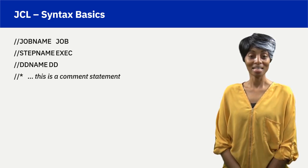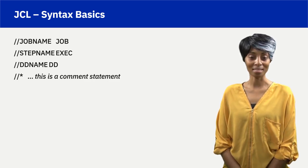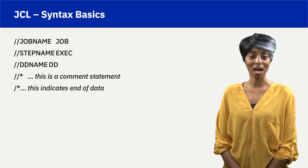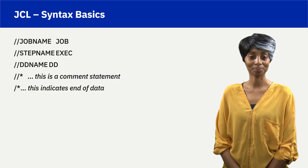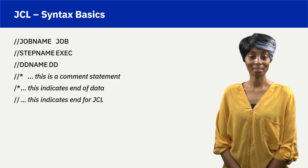Slash-slash immediately followed by an asterisk is a JCL comment statement. Slash immediately followed by an asterisk indicates JCL end of data. Slash-slash followed by a blank indicates end of JCL statements.